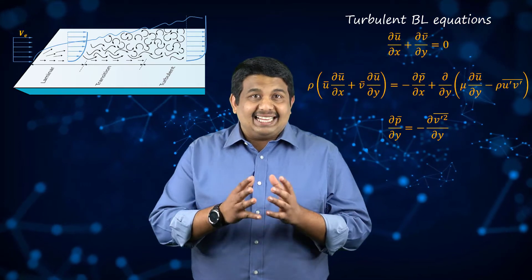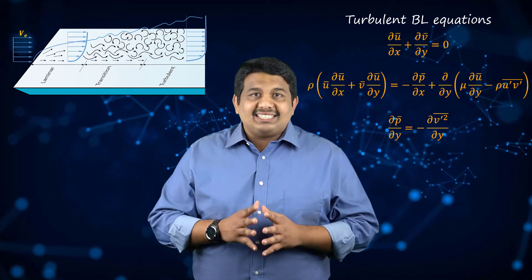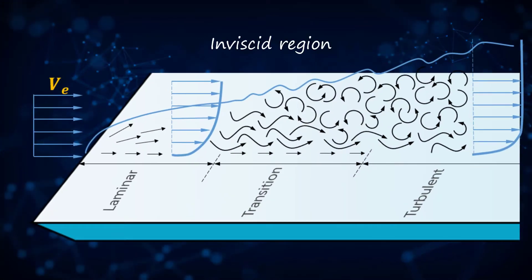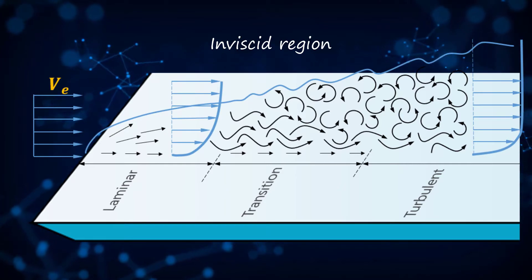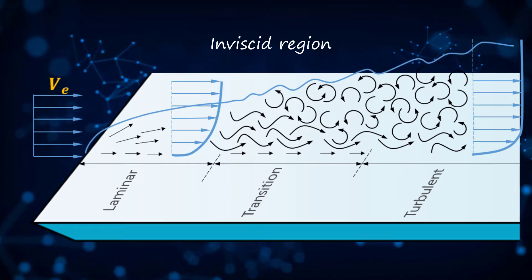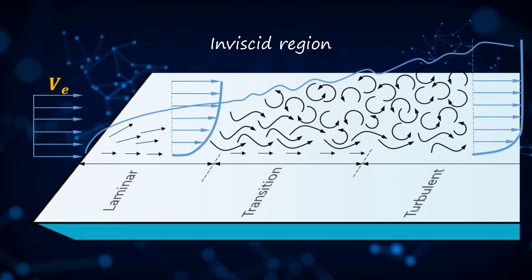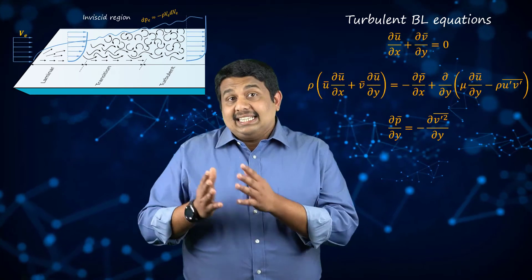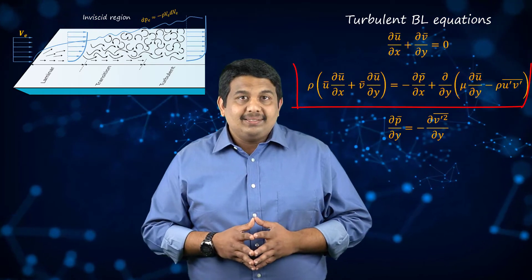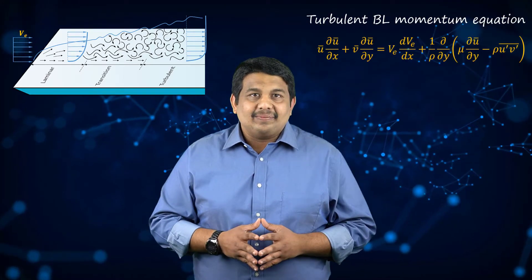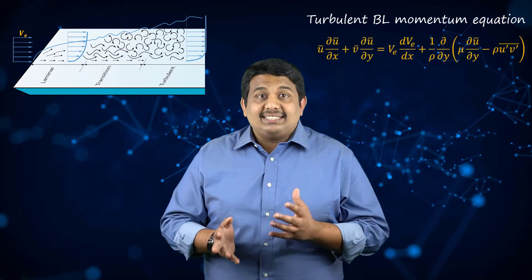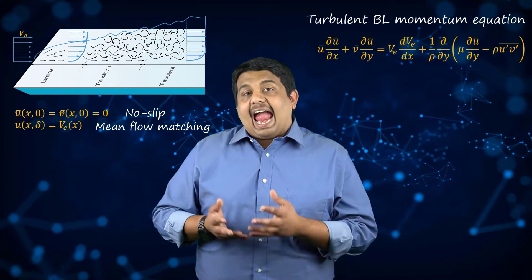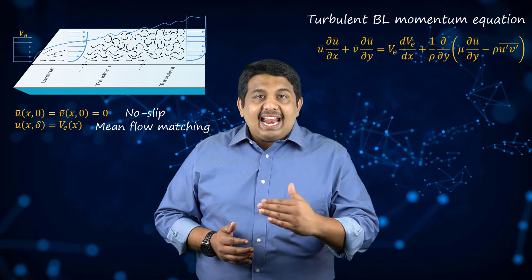For external flows like this case, since most of the viscous effects are restricted to the boundary layer, we can assume an inviscid region outside the boundary layer. Consequently, Bernoulli's equation is satisfied here, and at the edge of the boundary layer we have the following relation. Substituting this into the momentum equation, we obtain the equation shown here. These equations can be solved by applying the no-slip boundary condition on the flat plate and the mean flow matching condition at the edge of the boundary layer.